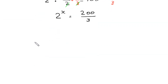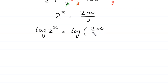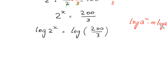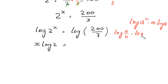Now, from here we take log of both sides. Log of 2 to the power x is equal to log of 200 divided by 3. Now, by using the log property that log of a to the power m equals m times log of a, this becomes x times log of 2. And by using the property log of a over b equals log of a minus log of b: